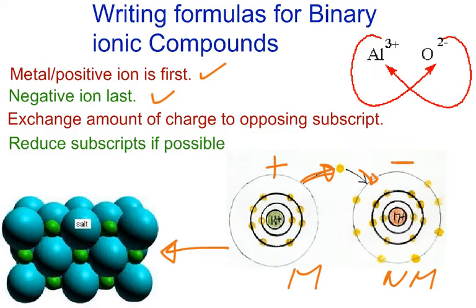Once again, we're moving on to the topic of bonding. But if you notice, you have to know your metals from your non-metals, so periodic table comes into play. And also, we have to still review atomic structure. What we're doing when we're writing these formulas, we're exchanging the amount of charge to the opposite subscript. So I'll explain it later. And if possible, we reduce subscripts.